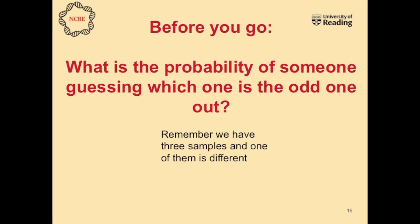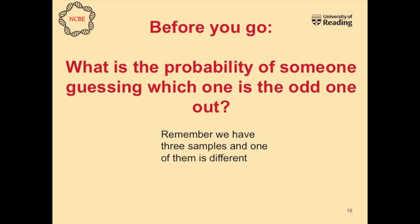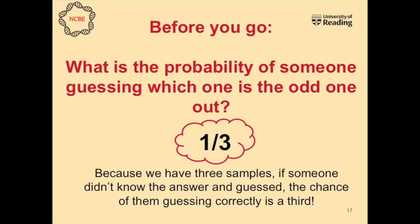The aim of this test is to have your three samples and work out which one is different — you've got two samples that are identical and one that is slightly different. Before you go, one quick question: this triangle test has three samples and one of them is different. What is the probability of someone guessing the right answer if they're not sure? Pause the video, think of the answer, then come back. The answer is one third. So if you're not sure and you're going to guess, you've got a one in three chance of getting it right, because one of the three samples is the different one.